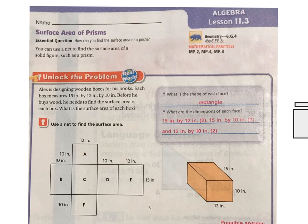There are two that have the 10 by 12. Actually, slightly different now that I'm looking at it. This one is actually 10 high and 15, whereas this one is 12 by 15. So actually, there's two that are 12 by 15, two that are 10 by 12, and two that are 10 by 15. So a little bit different — you can see that here.